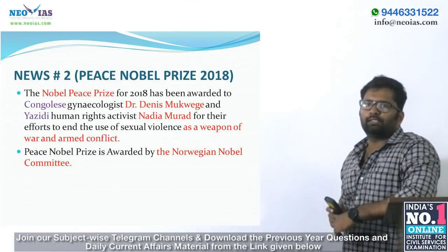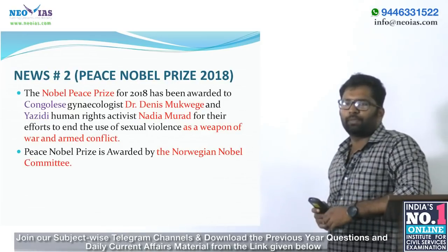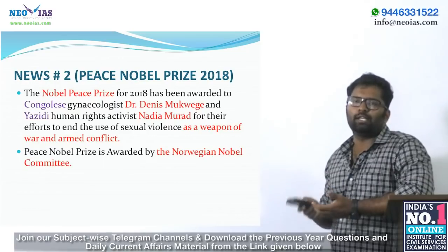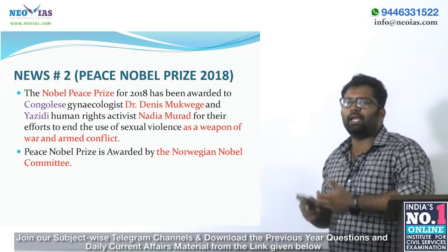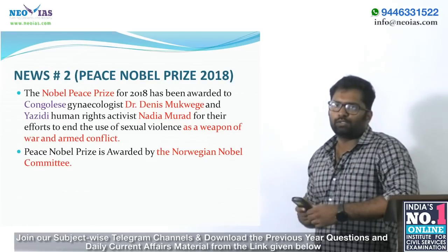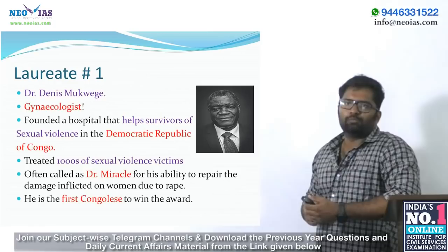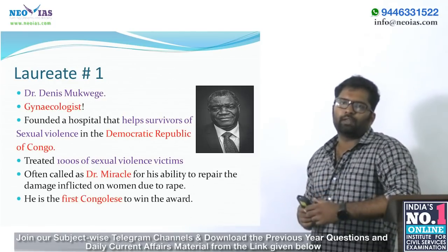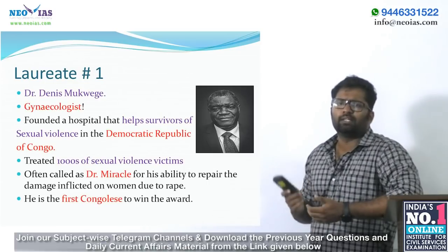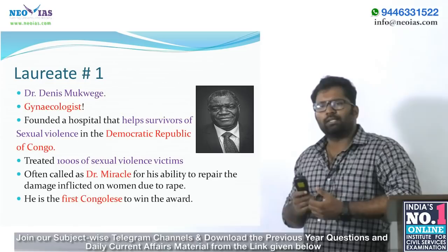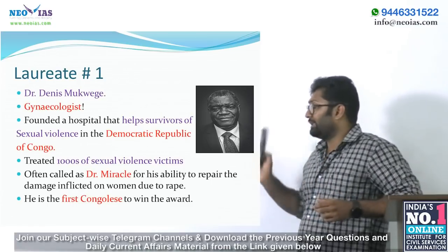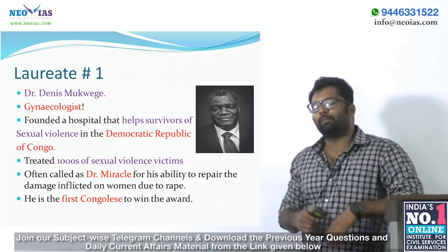Our next news: the Nobel Peace Prize for 2018 has been awarded to Congolese gynecologist Dr. Denis Mukwege and Yazidi human rights activist Nadia Murad for their efforts to end the use of sexual violence as a weapon of war and armed conflict. Dr. Mukwege founded a hospital that helps survivors of sexual violence in the Democratic Republic of Congo, treated thousands of victims, and is often called 'Dr. Miracle.' He is the first Congolese person to win the Nobel Prize.